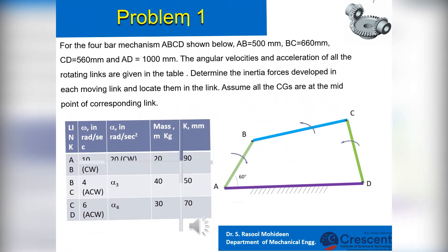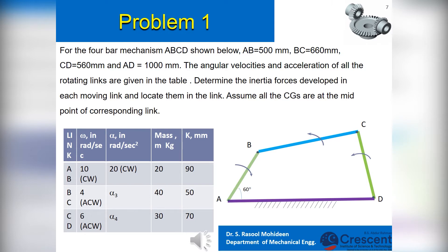Problem 1 is based on D'Alembert's principle to find the inertia forces. For the 4-bar mechanism ABCD shown below, AB equals 500 millimetres, BC equals 660 millimetres, CD equals 560 millimetres and AD equals 1000 millimetres. The angular velocities and accelerations of all the rotating links are given in the table. Determine the inertia forces developed in each moving link and locate them in the link. Assume all the CGs are at the midpoint of the corresponding link.